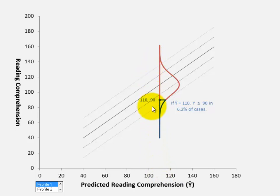110 is the predicted reading comprehension score, and then the actual reading comprehension scores are dispersed on this y-axis. On average they are 110, but they have a standard deviation of 12.99. And in blue we see the region of the conditional distribution that is 90 or lower. About 6.2% of cases score 90 or lower on reading comprehension.